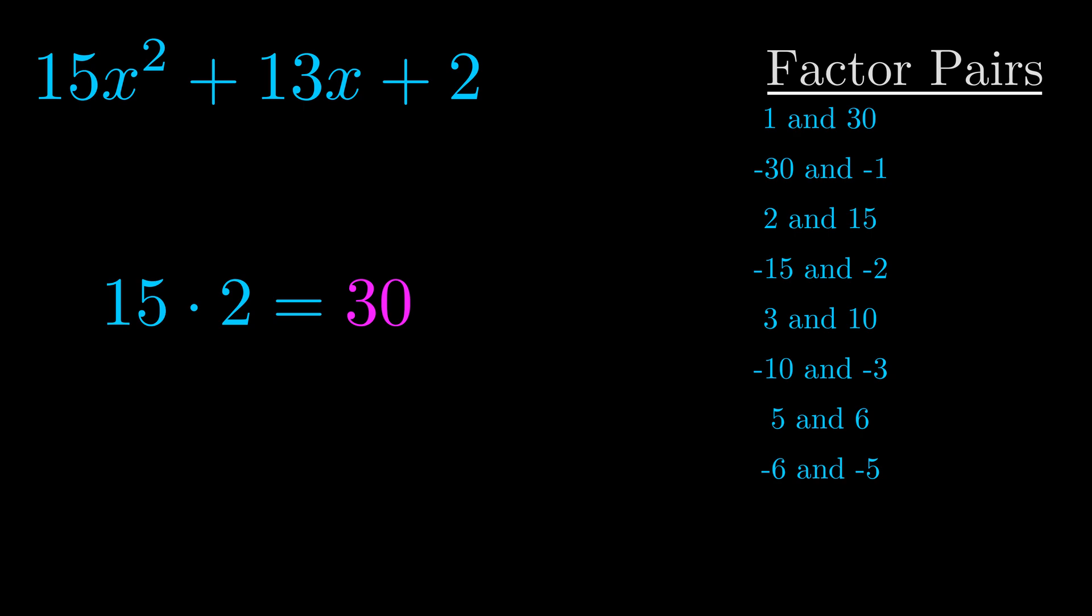The b value is the coefficient on the x term. That's the middle term, the one that we haven't done anything with yet. And really this is the only factor pair that we need.